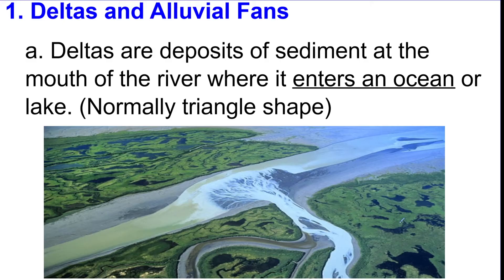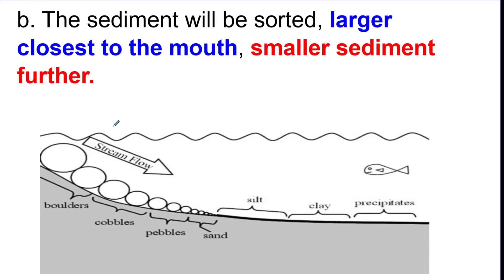When a river dumps into an ocean or a bigger river, this is called the mouth. It sorts the sediment by size: boulders are dropped off first, then cobbles, then pebbles, then silt and clay. This forms a delta, which is a triangular-shaped depositional structure that sorts sediment.